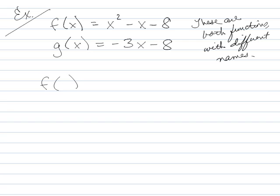I'm going to treat this the exact same way as I have before. So if I have f of 2, I'm going to plug 2 in to this first equation up here. So everywhere I see an x, I'm going to put a 2. 2 squared minus 2 minus 8. 4 minus 10. Negative 6.